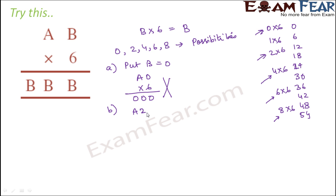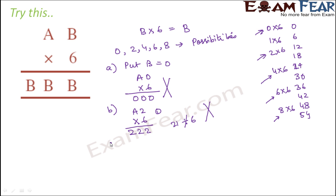Trying b=2: a2 × 6 = 222. 6×2=12, carry 1. Now 6×a + 1 must give 22 in the tens and hundreds, so 6×a must equal 21. But 21 is not completely divisible by 6, so b=2 is not a valid solution.